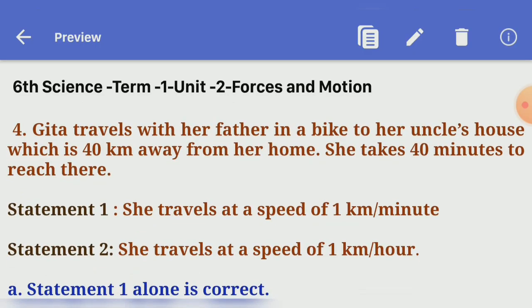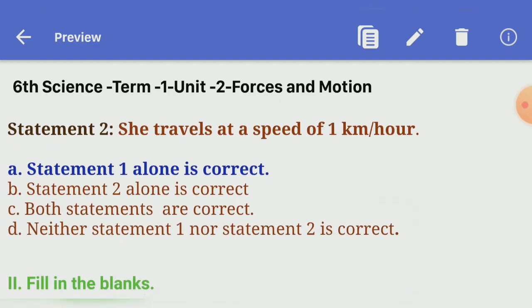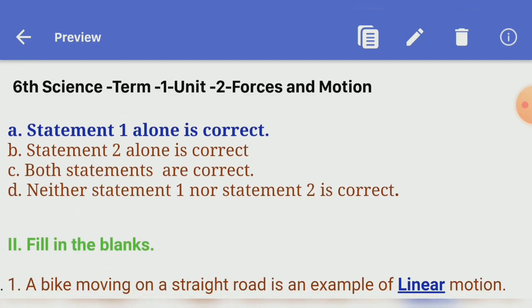Fourth one: Geeta travels with her father in a bike to her uncle's house which is 40 km away from her home. She takes 40 minutes to reach there. Statement 1: she travels at a speed of 1 km by minute. Statement 2: she travels at a speed of 1 km by hour. Which answer is correct? Four options given. Answer A is correct. Statement 1 alone is correct.